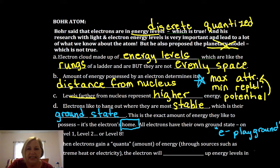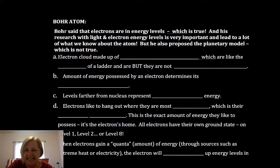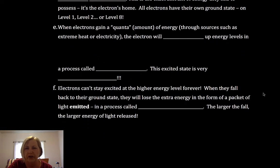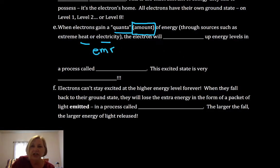Now electrons can gain energy and move away from their ground state. So if they gain a quantum of energy, that's a set given amount of energy, and they can gain or absorb that energy through sources such as heat or electricity or electromagnetic radiation.